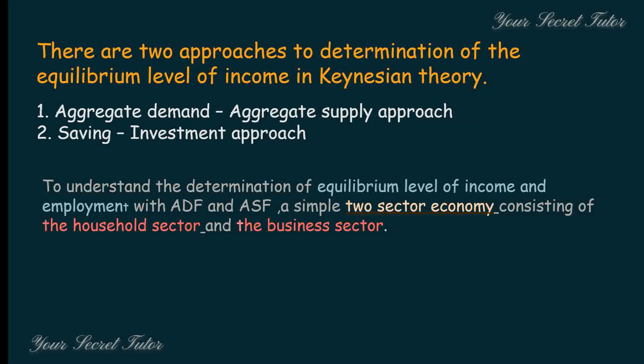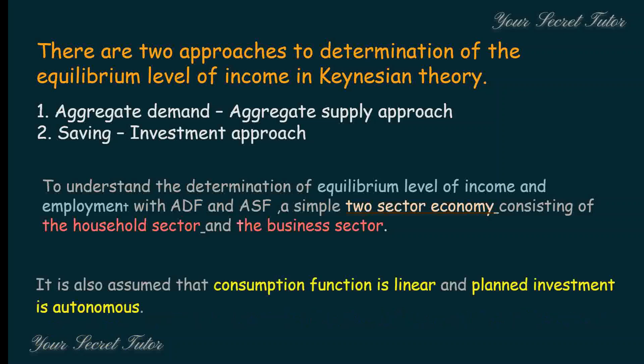In this two-sector model using ADF and Aggregate Supply Function, it is assumed that the consumption function is linear — meaning consumption is continuous and keeps on increasing.